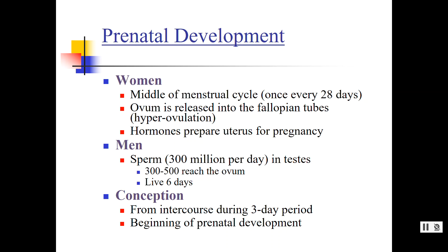Every month a woman's body is preparing itself for pregnancy, and once it realizes it's not pregnant, it sheds the uterine lining. Men are developing millions of sperm per day. When released, about 300 to 500 can reach the egg and they can live for up to six days. Conception typically happens within a three-day period, but could be up to six days. Once that egg and sperm unite, we have the beginning of prenatal development.